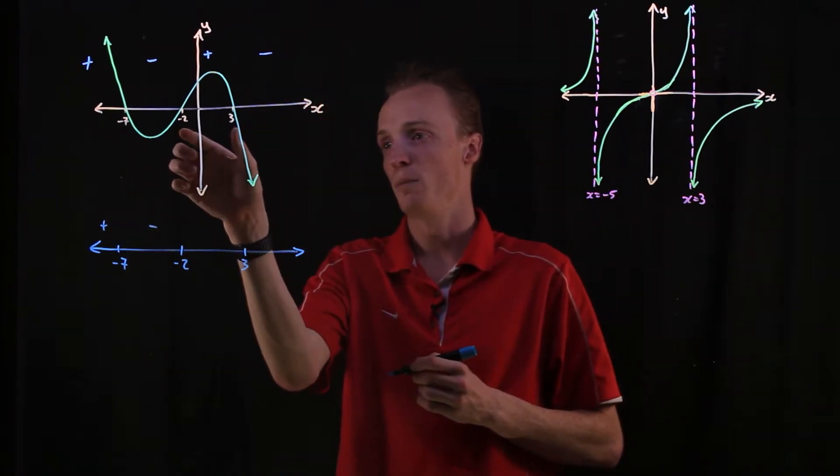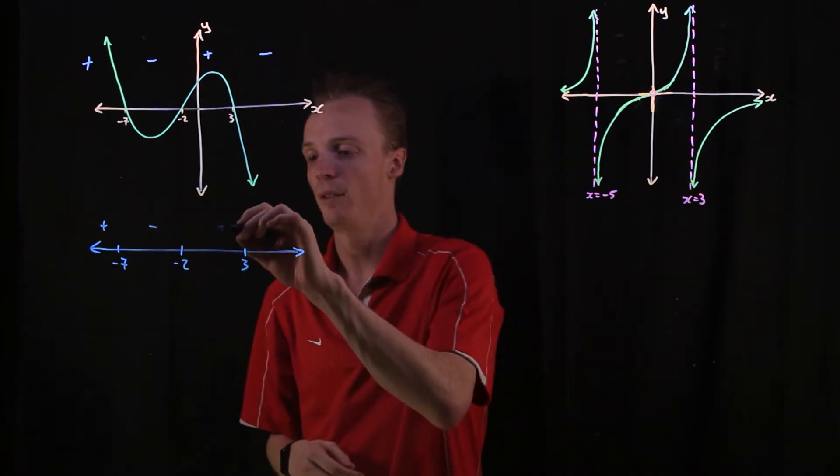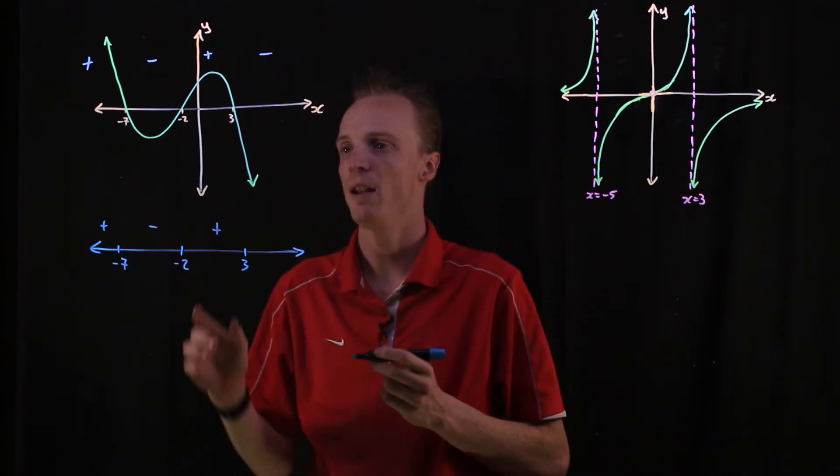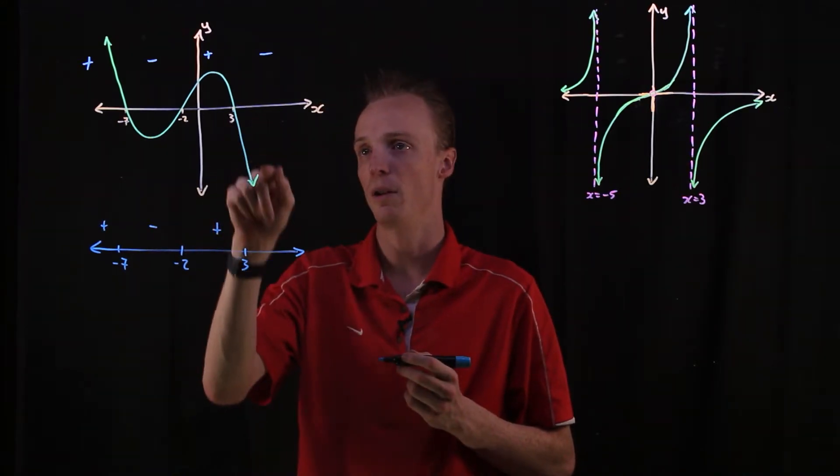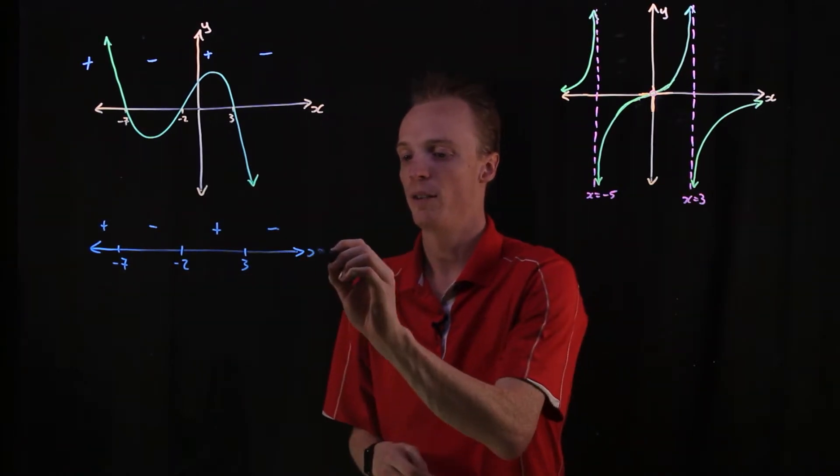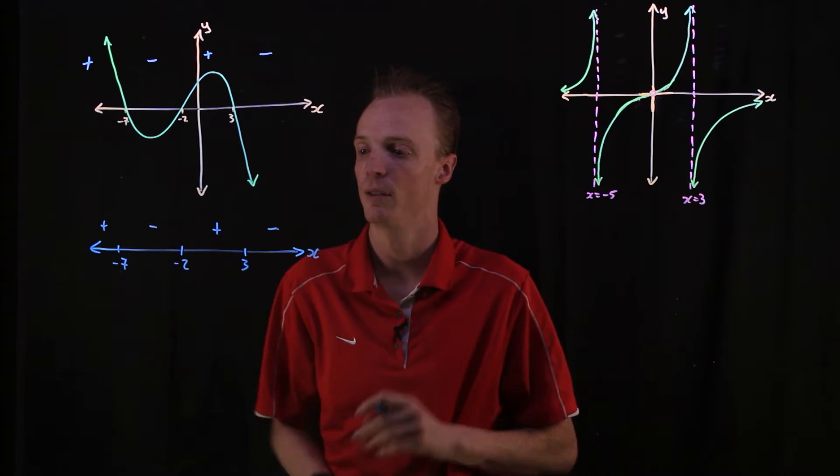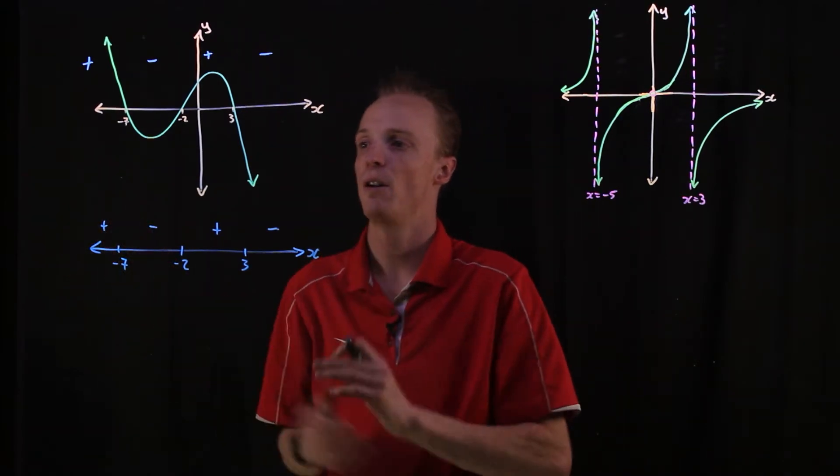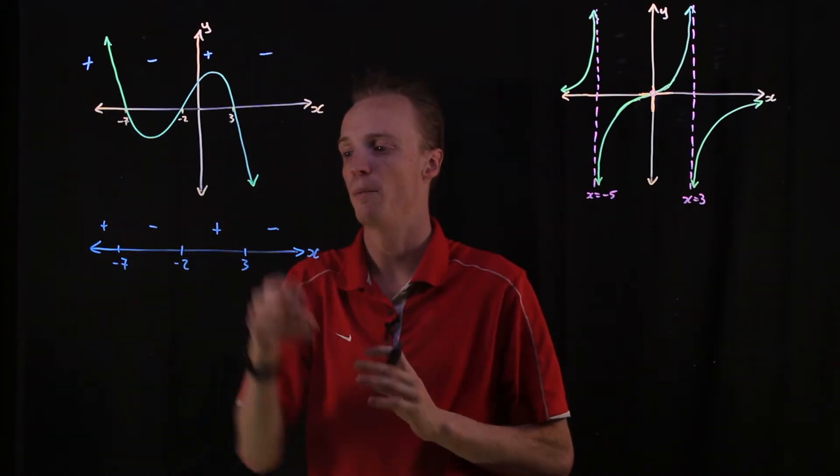In between negative 2 and positive 3, it's above the x-axis, so it becomes positive again. And then after 3, it goes below the x-axis, so it's negative again. And we want to say that this is our x-axis. So here is a sign diagram that represents this information.